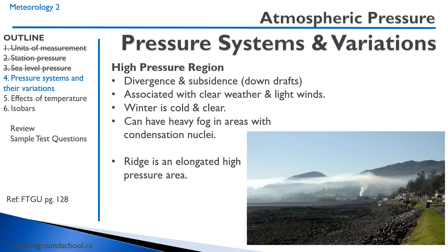Here's an example — a picture of what I mentioned about how you can end up with fog. You can see it's a beautiful clear day. However, the smoke coming out from this industrial site presents condensation nuclei, and it's getting forced down by the high pressure region, leaving a layer of smoke or haze over the area.